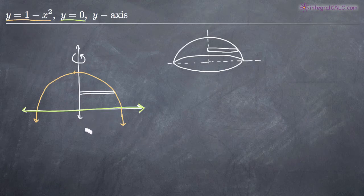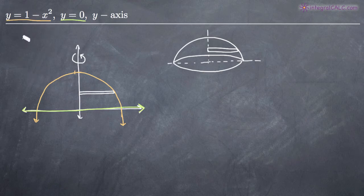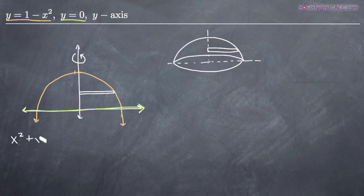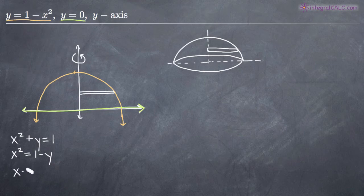Because we're rotating around the y-axis, one of the first things we need to do is solve both of our functions in terms of x — that is, change them from y equals something into x equals something. So instead of y equals 1 minus x squared, we add x squared to both sides to get x squared plus y equals 1, then subtract y to get x squared equals 1 minus y, and take the square root of both sides to get x equals the square root of 1 minus y.